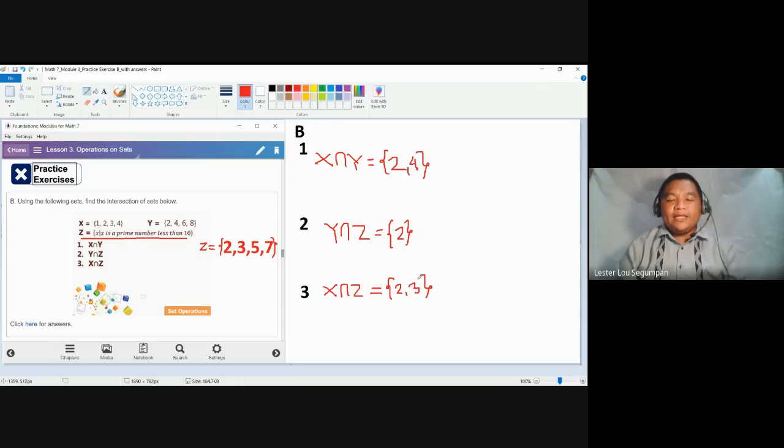Before we end this video, what if we interchange the sets in number 3? Let's say the intersection of Z and X instead. Here, we're asked about the elements found in Z that are also in set X. Similarly, our set should contain the elements 2 and 3.